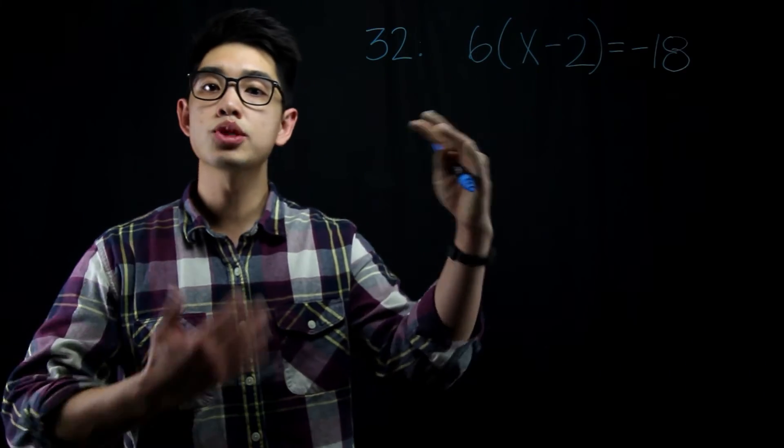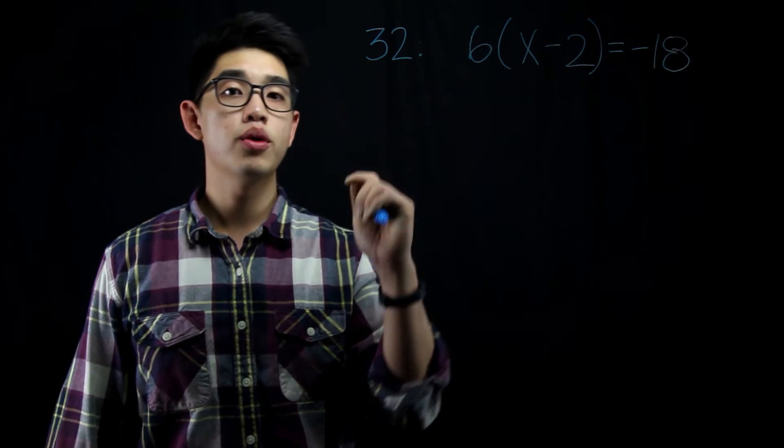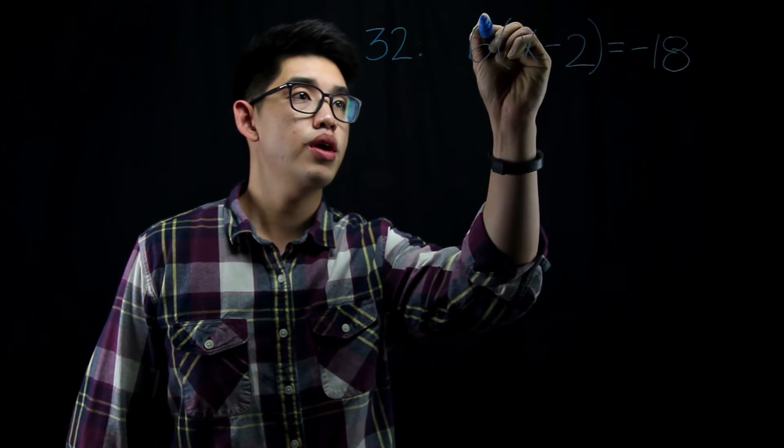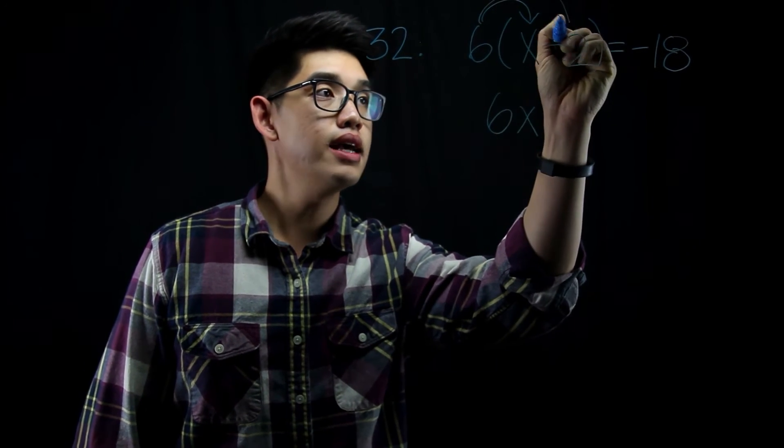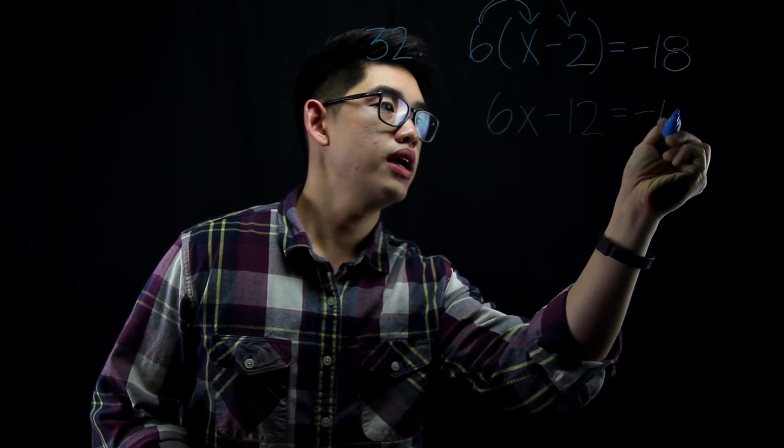For number 32, I have 6 times the quantity x minus 2, that equals negative 18. First thing I want to do is I want to distribute the 6 into the x and to the negative 2. Here I go. 6 times x, that's going to be 6x. 6 times negative 2, that's negative 12. And that equals negative 18.